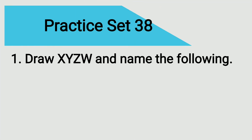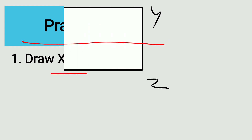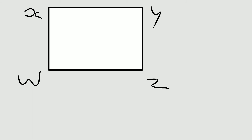Then we are taking Practice Set 38. The first question is: draw quadrilateral XYZW and name the following. You have to draw the figure of quadrilateral XYZW and name the following parts from the figure. Here is the figure of quadrilateral XYZW.